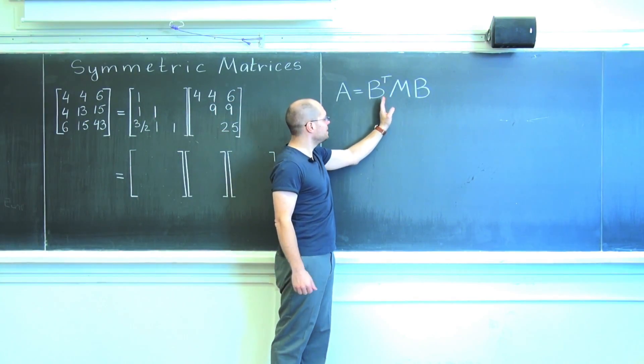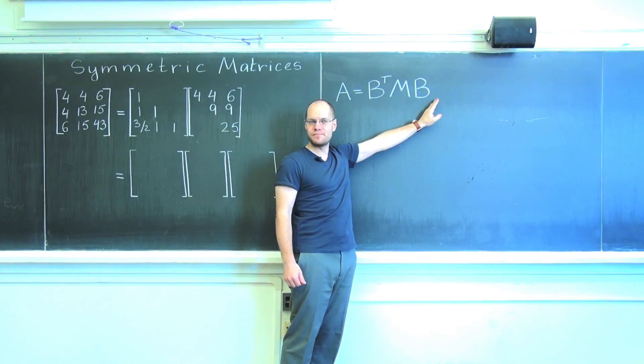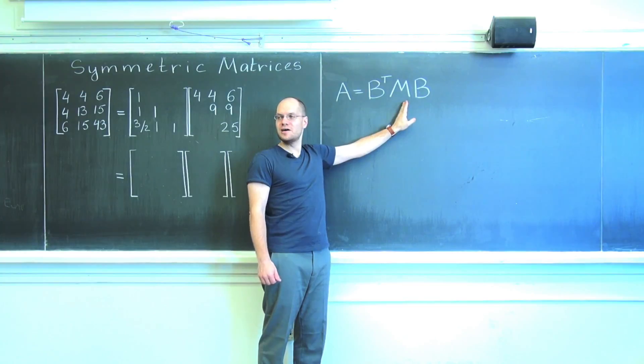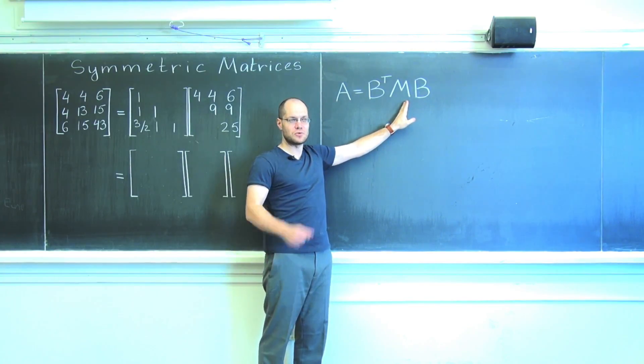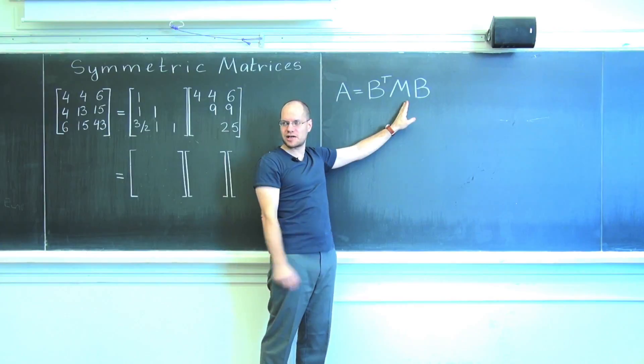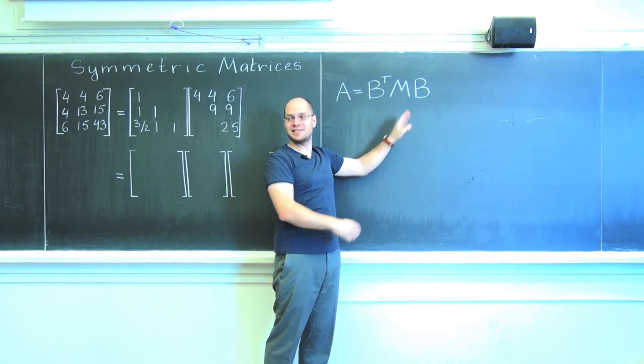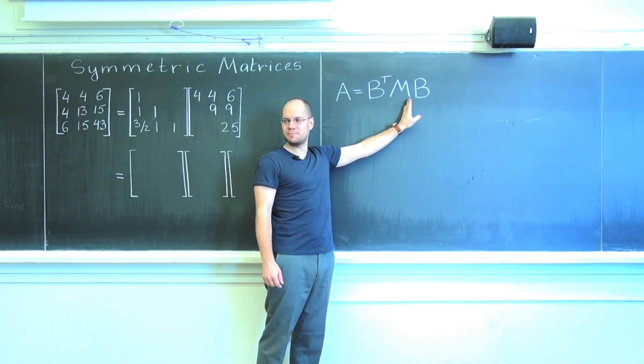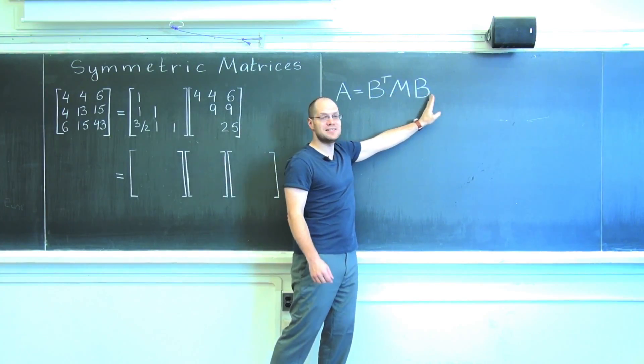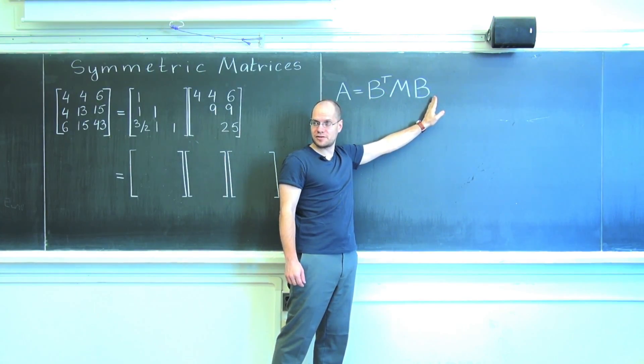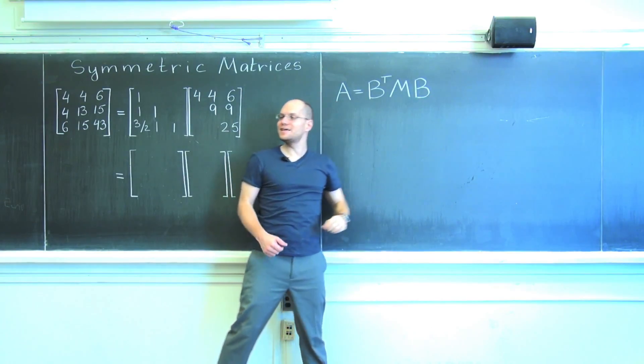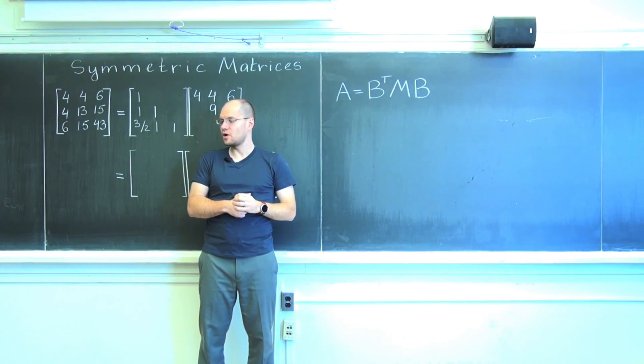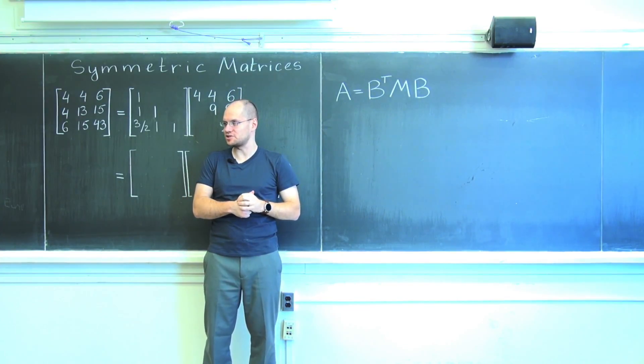Right now I will repeat the logic but for a slightly more complicated combination: B transpose M B, where you're told that M is a symmetric positive definite matrix. We just put something inside of B transpose B. Last lecture it was the identity matrix, but now it's some other symmetric positive definite matrix. The question is, is this combination number one symmetric necessarily, and if it is, is it necessarily positive definite?